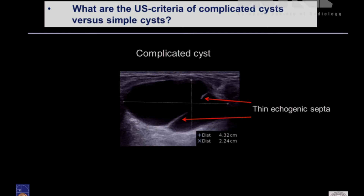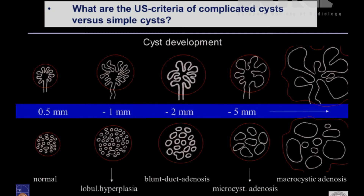The complicated cyst may show thin echogenic septa. It is very worthwhile to understand how cysts in the breast develop. First, we study the typical acini, or the terminal ductulolobular unit, a structure of about 0.5 mm. It may increase — there can develop lobular hyperplasia. If secretion pressure inside increases, it will enlarge. Then blunt duct adenosis, where the acini are always more and more enlarging, the whole lobule becomes bigger, deforms its shape, and you get macrocystic adenosis.